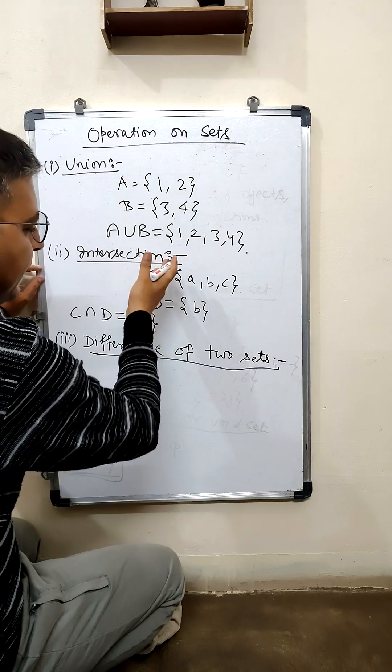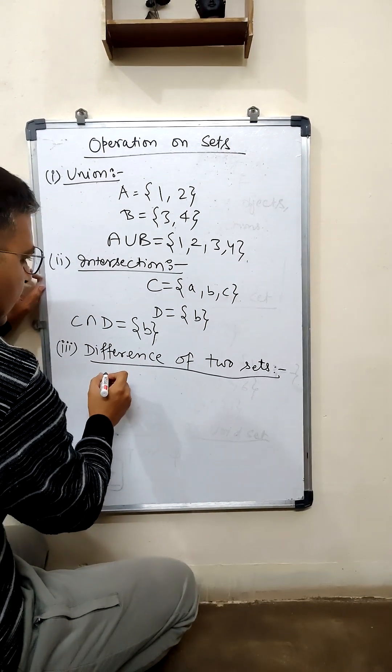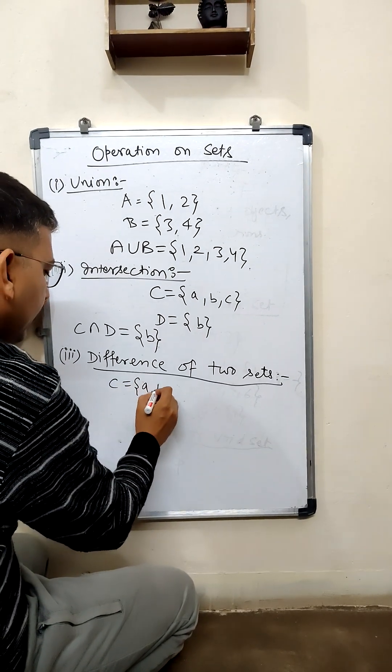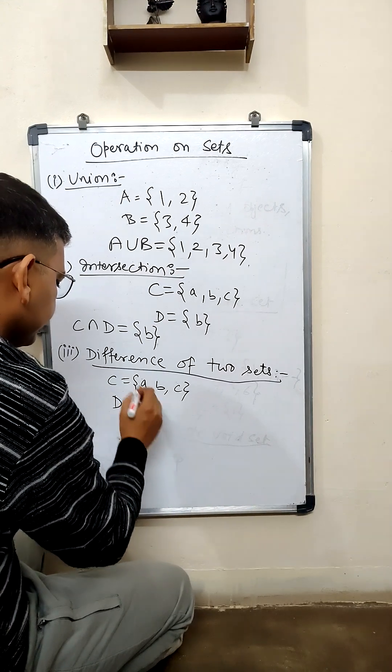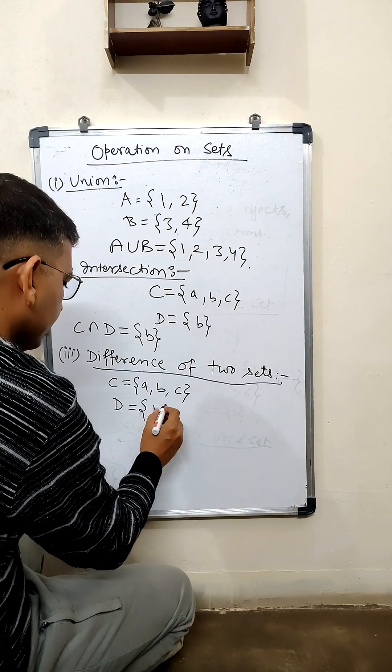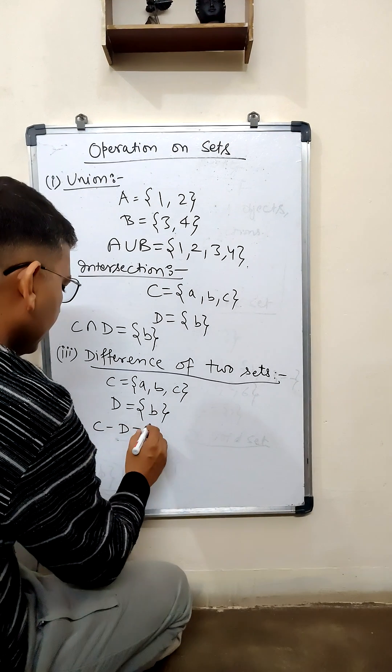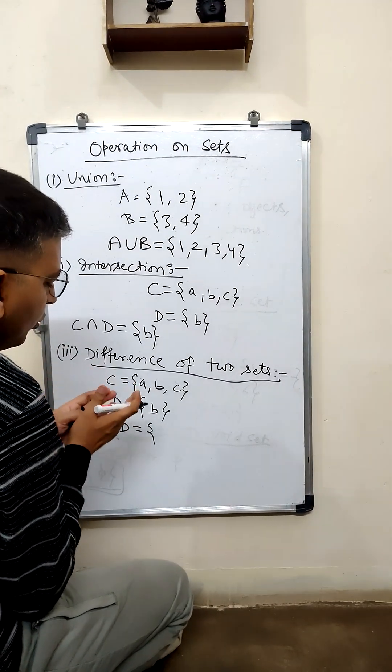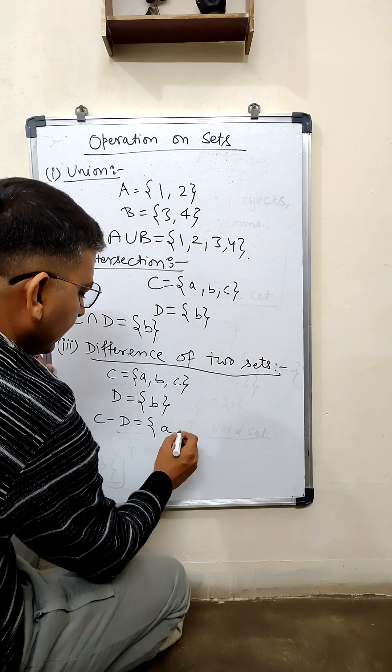For example, we'll take the case from before. As we can see, C equals a, b, c and D equals b. So C minus D, that is C difference D, will be those elements of C which do not exist in D. So our answer will be a, c.